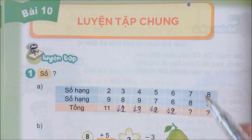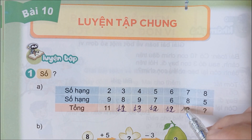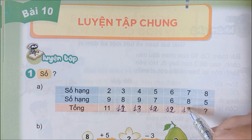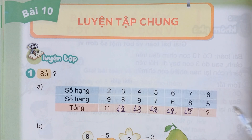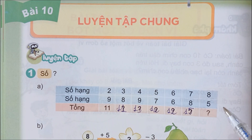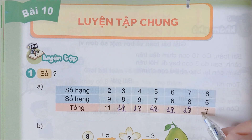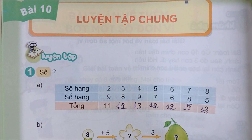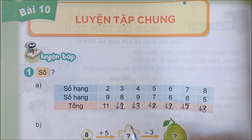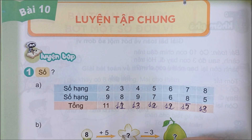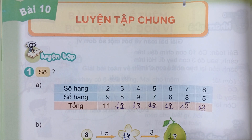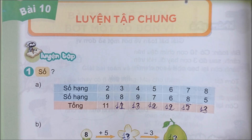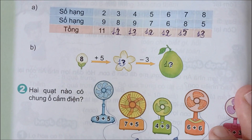6 cộng 6 bằng 12, 7 cộng 8 bằng 15, 8 cộng 5 bằng 13. Qua bài số 2.